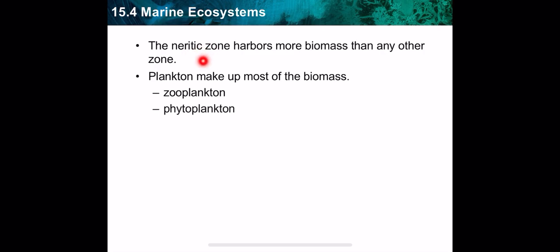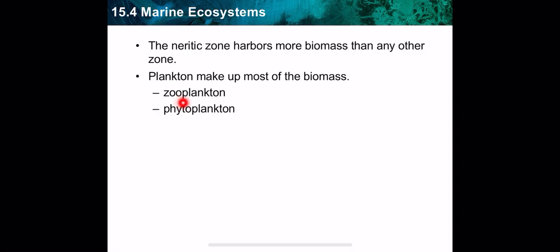After the intertidal zone is the neuritic zone, which is characterized by the highest biodiversity among ocean zones — it harbors more biomass than any other zone. This is because the neuritic zone contains planktons. Most of the biomass comes from planktons. There are two types: zooplanktons, which are tiny animals and therefore consumers, and phytoplanktons, which are algae and photosynthetic bacteria and are producers.